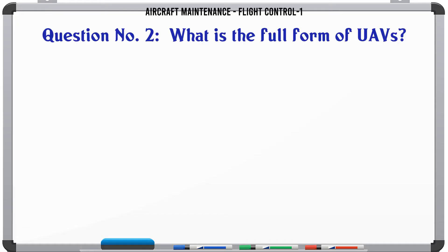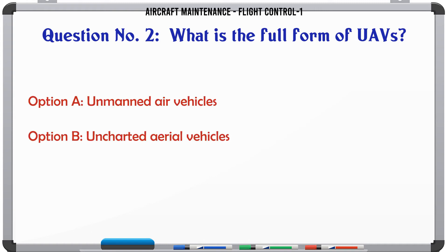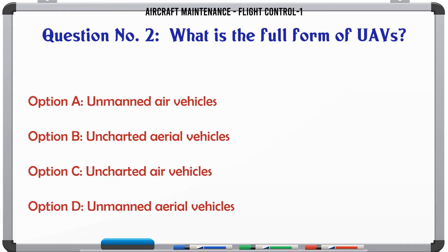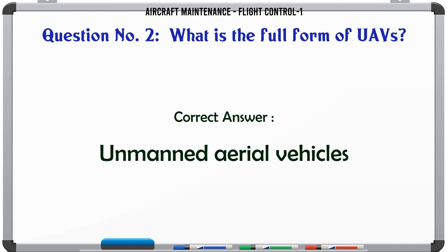What is the full form of UAVs? A. Unmanned air vehicles. B. Uncharted aerial vehicles. C. Uncharted air vehicles. D. Unmanned aerial vehicles. The correct answer is Unmanned aerial vehicles.